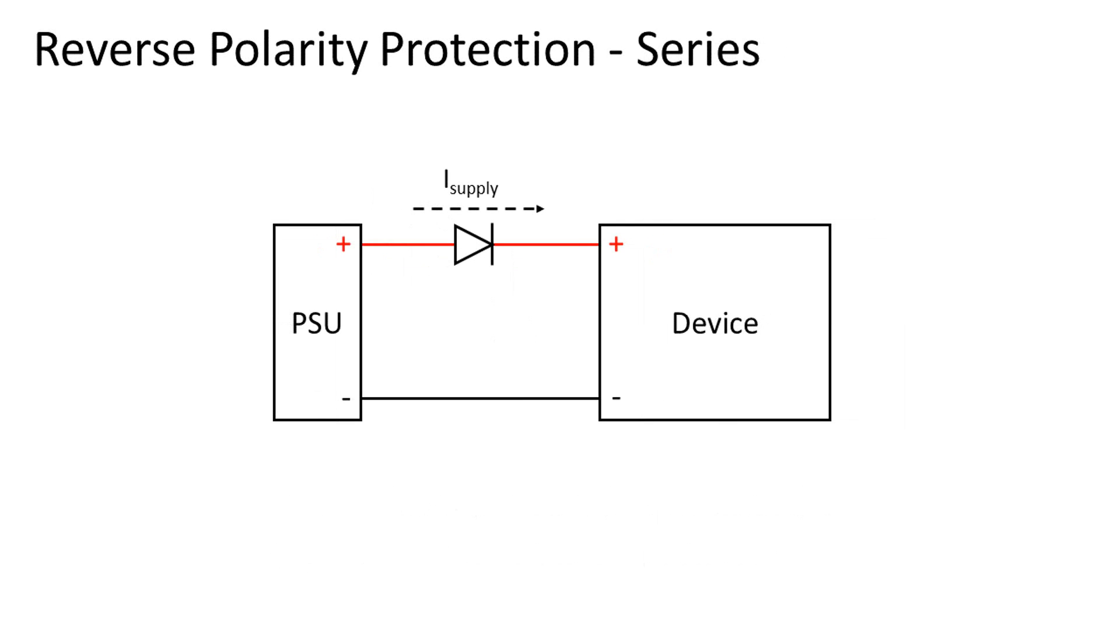Now the second type of reverse polarity protection takes the diode and puts it in series with the input voltage. When the polarity is right, the diode will be forward biased and the circuit gets powered. When the polarity is wrong, the diode is reverse biased and no current will flow. Now this is all there is to it, no extra resistors or fuses are needed, even though the latter is always part of a safe design.